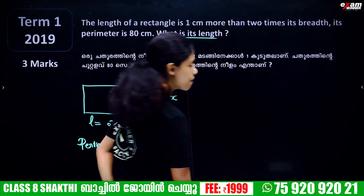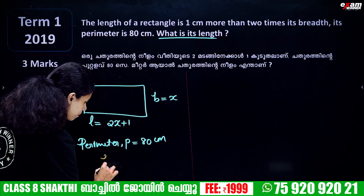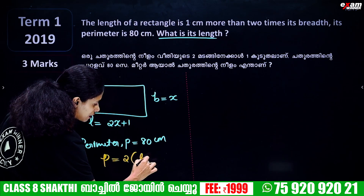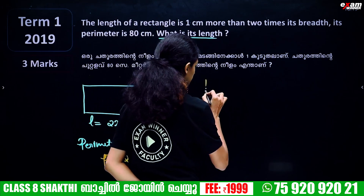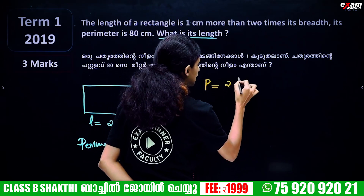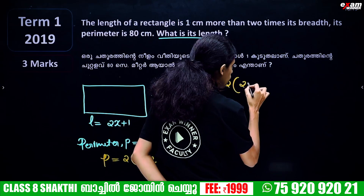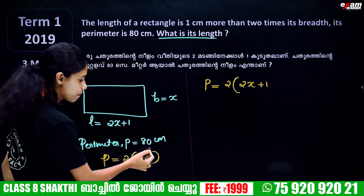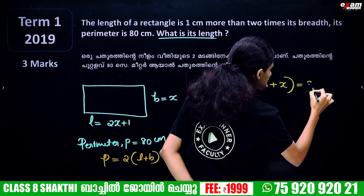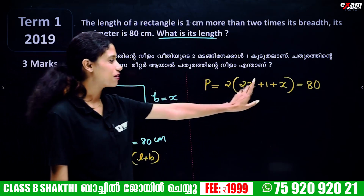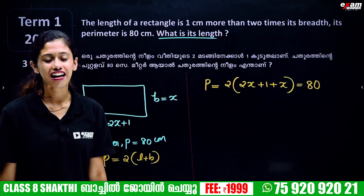We form the equation using the perimeter formula. Perimeter equals 2 into length plus breadth. I say L is 2x plus 1 and breadth b is x. So the perimeter equation is ready.